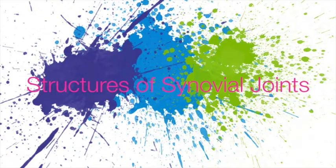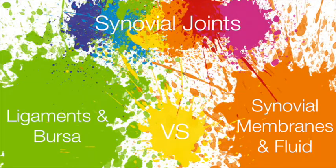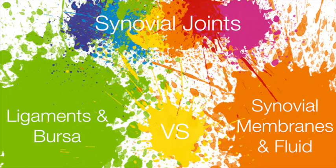Now let's check out what makes up a synovial joint, like the hip, knee, elbow, or shoulder. A ligament is a band of fibrous connective tissue that connects one bone to another bone — don't confuse ligaments and tendons, as tendons attach muscles to bones. Synovial joints are surrounded by a fibrous capsule and are lined with synovial membrane. The synovial membrane secretes synovial fluid, which acts as a lubricant to make smooth movement of joints possible. A bursa is a fibrous sac lined with synovial membrane and contains synovial fluid, acting as a cushion to ease movement in areas subject to friction, like the shoulder, elbow, and knee joints.